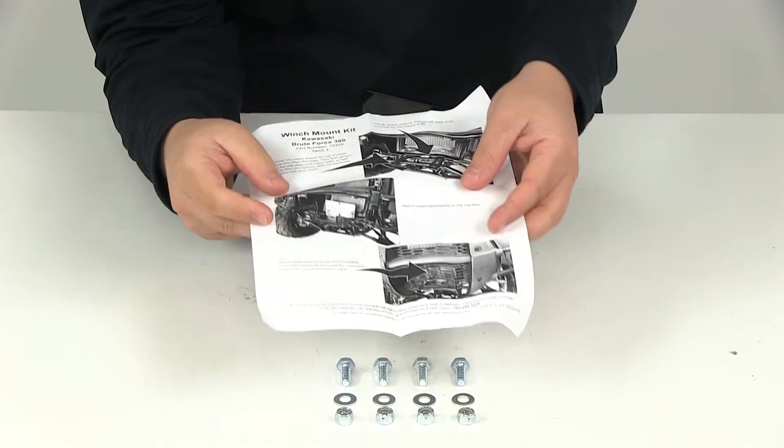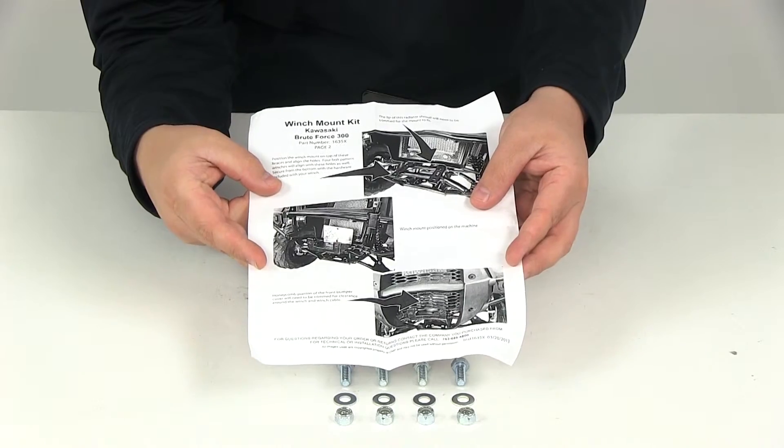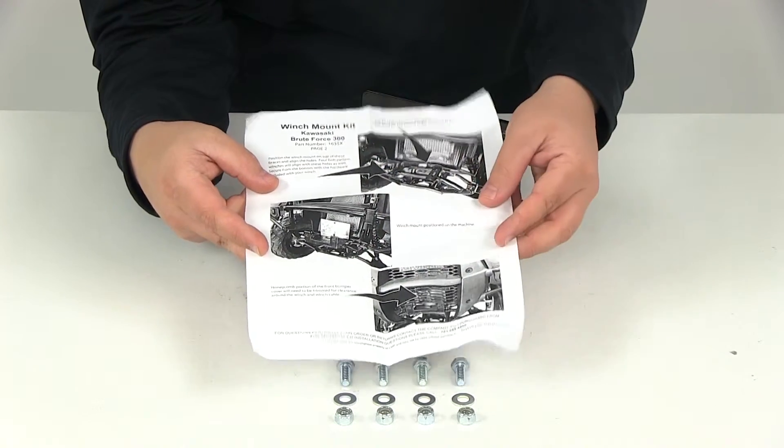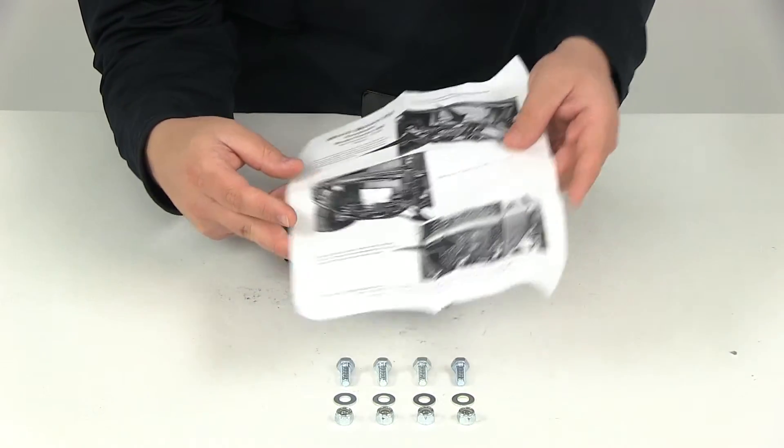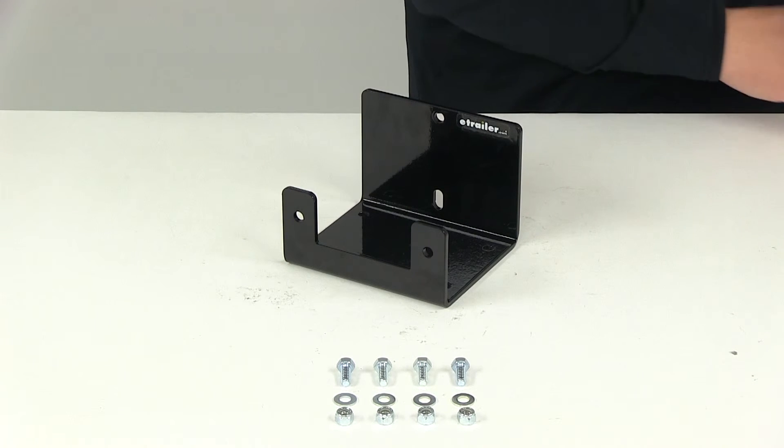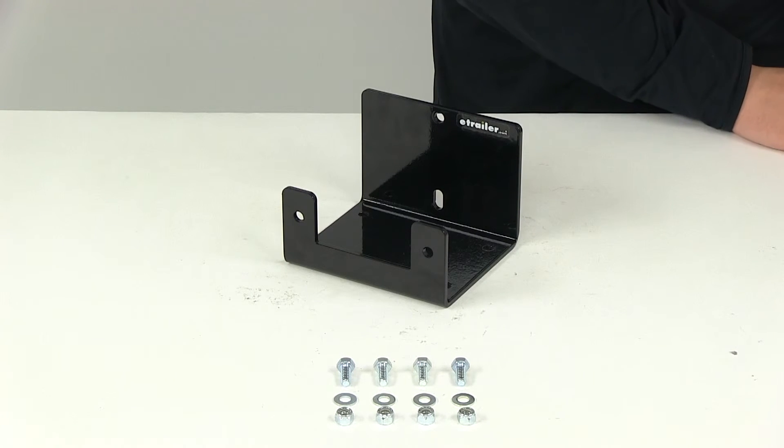The instructions will help walk you through the installation process step by step. We've got some nice pictures on there to make installation a little bit easier. To get the winch and fairlead attached, you'll need to use the hardware that came with those items.